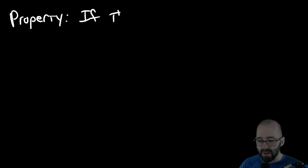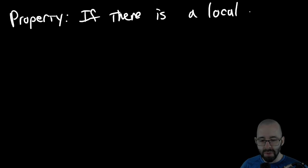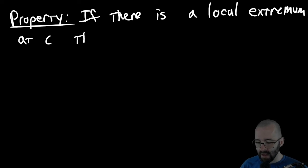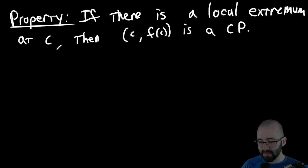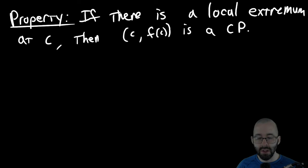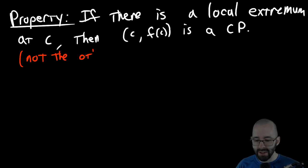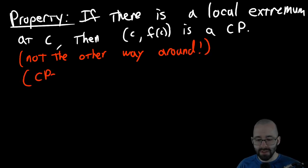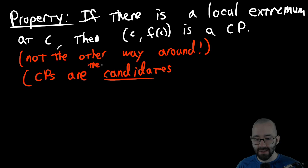Property: If there is a local extremum — so again, local minimum or local maximum — at c, then the point (c, f(c)) is a critical point. Critical points are the candidates for local extrema, but not the other way around. Critical points are the only candidates, but they are just candidates for local extrema.